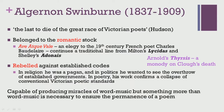Algernon Swinburne, who lived from 1837 to 1909, is a writer we have already looked at, but he forms a significant part of the Pre-Raphaelite Brotherhood as well. As Hudson points out, he was the last to die of the great race of Victorian poets. In a certain way, his genius belonged to the Romantic stock, though he lived in the Victorian period. His significant work Ave Atque Vale is an elegy to the 19th century French poet Charles Baudelaire, who was also a significant influence in framing the tenets of the Pre-Raphaelite Brotherhood, continuing the tradition of Milton's Lycidas and Shelley's Adonais.